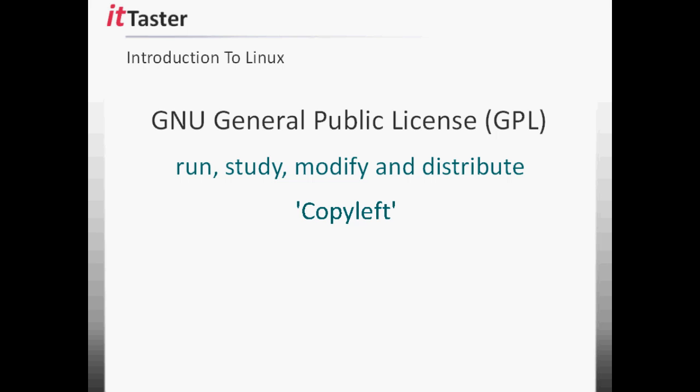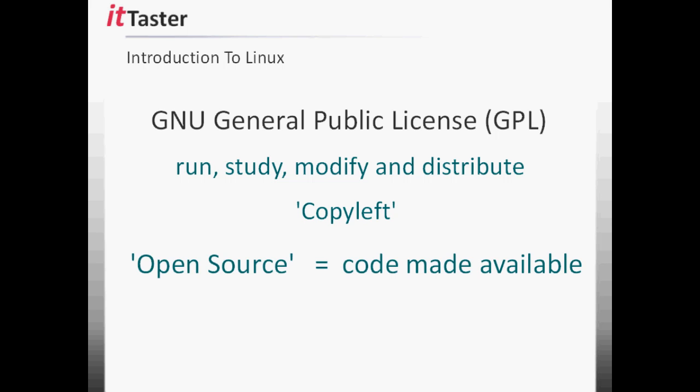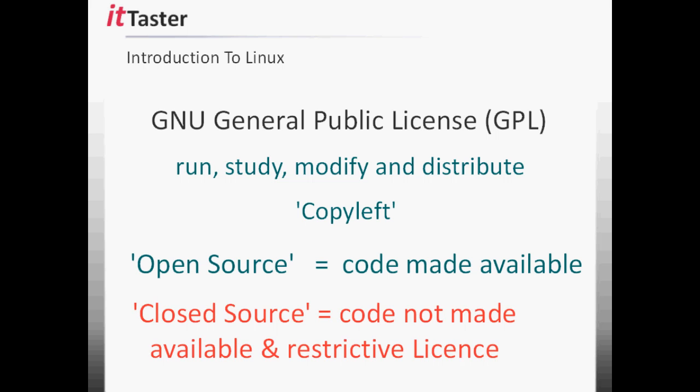Linux is open source software, which means the actual source code — its programming — is made available. The exact opposite of open source software is closed source software, which typically belongs to a commercial organisation where the source code is not made available and is not free to study, modify or distribute.